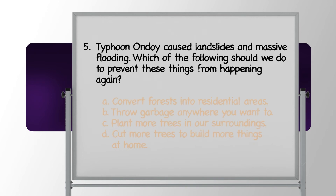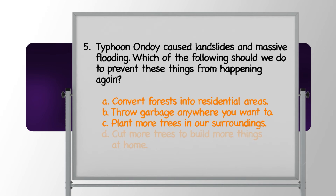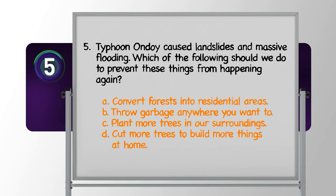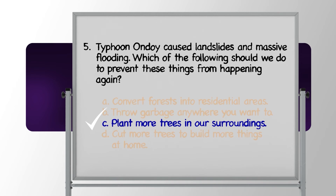Number 5: Typhoons can cause landslides and massive flooding. Which of the following should we do to prevent these things from happening again? A. Convert forests into residential areas, B. Throw garbage anywhere you want to, C. Plant more trees in our surroundings, or D. Cut more trees to build more things at home. The correct answer is letter C — Plant more trees in our surroundings. Because trees help keep soil in place and their roots soak up water. Good job, kids!